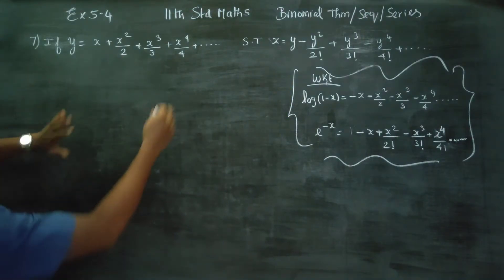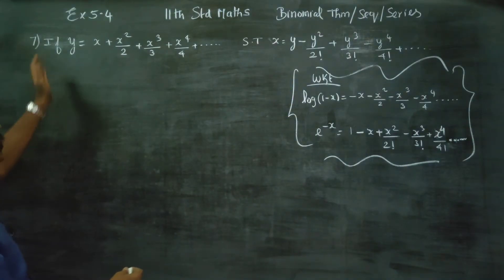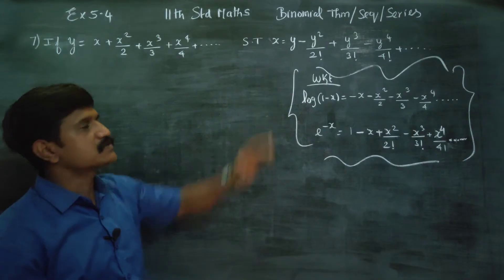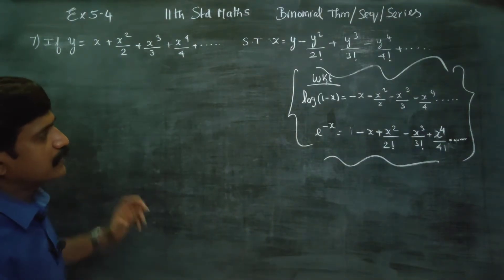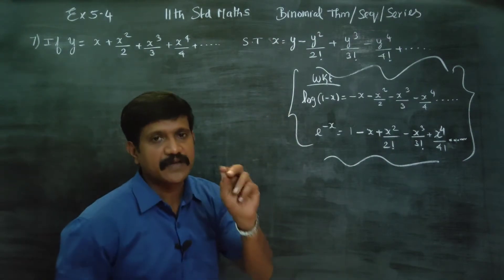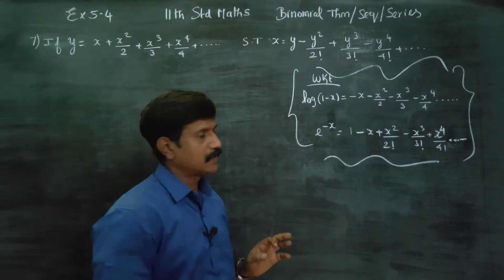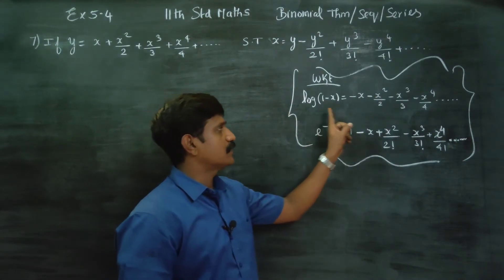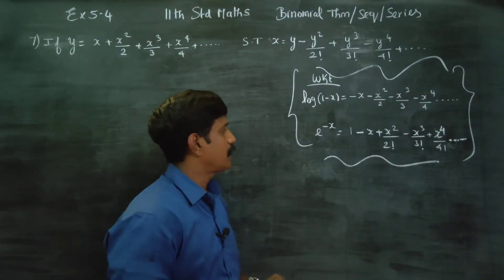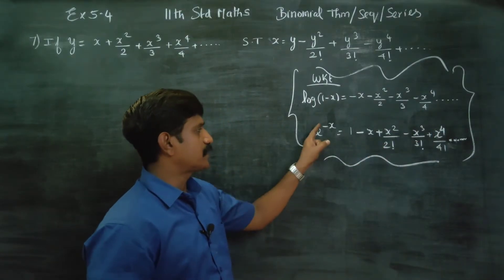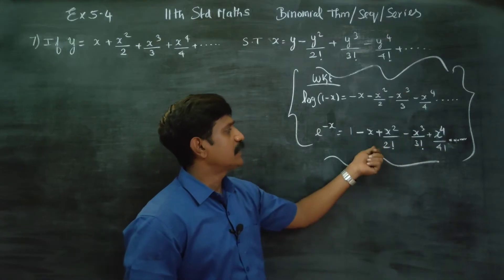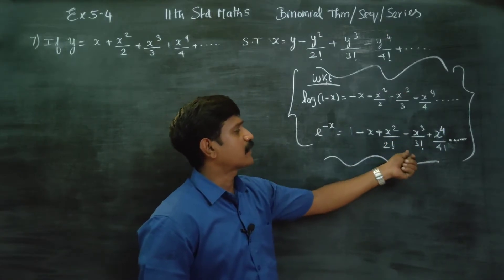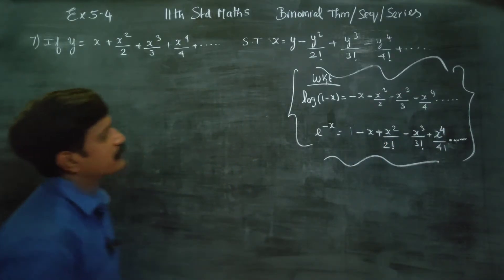This is the opposite approach. Y is equal to something; we need to prove x is equal to something. To complete this sum, we need two formulas at our fingertips. For log(1 minus x), taking it all out gives a full minus series. For e power minus x, it alternates minus, plus, minus, plus with x square, 2 factorial, 3 factorial continuing.